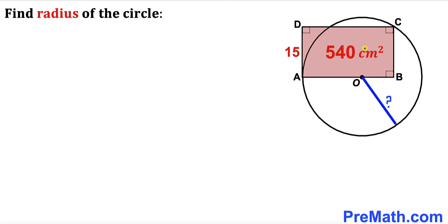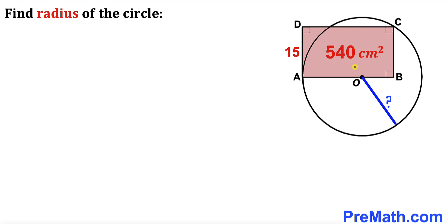Welcome to pre-math. In this video we have this pink rectangle ABCD and a circle with center O, as shown in the diagram, such that the area of the pink rectangle is 540 square centimeters, one of its side lengths AD is 15 centimeters, the center O is on side AB, and our task is to calculate the radius of this circle.